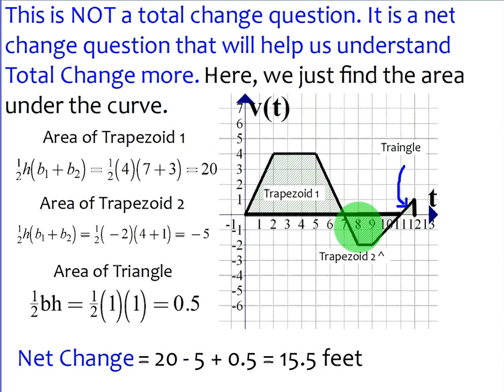However, the trapezoid below the t-axis is going to have two different bases. And its height is going to be negative 2, since it's below. And we will find the area of this trapezoid to be negative 5. And we have this little triangle right here. 1/2 base times height is going to be 0.5. If we add these three things up, we get the net change or the displacement of the squirrel. What this says is the squirrel is basically 15.5 feet from where it started.